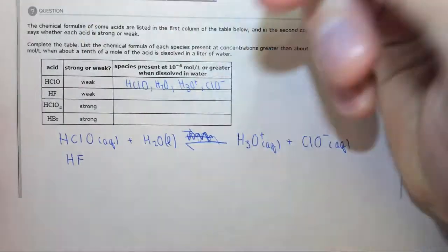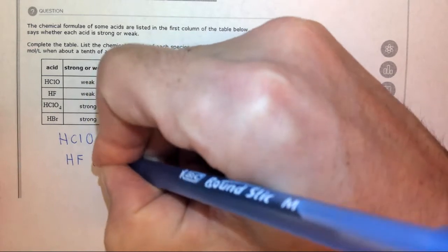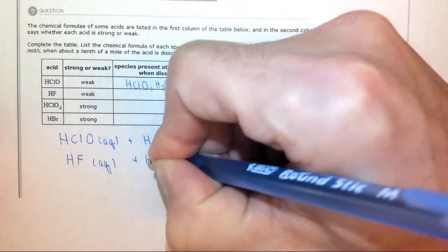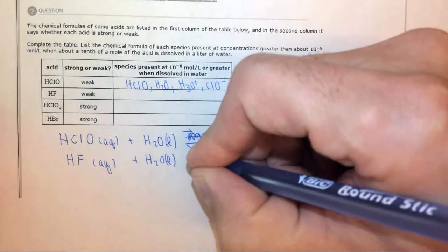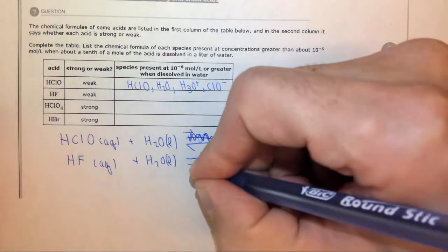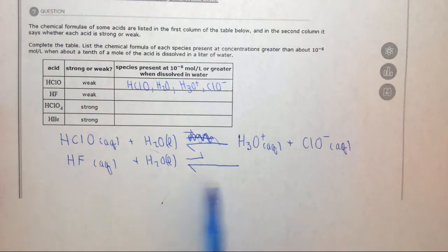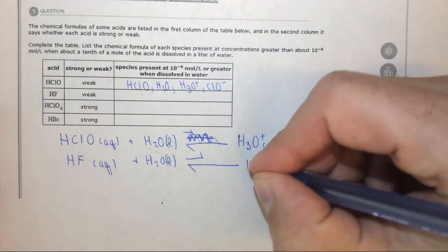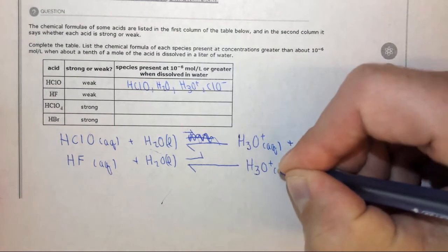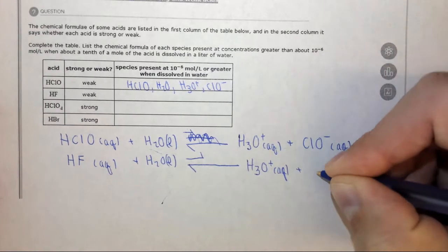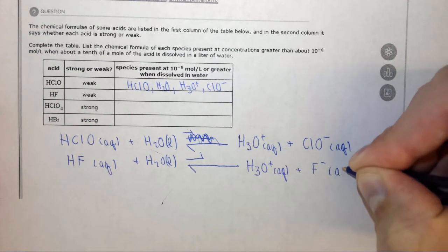Next one, HF, which is a weak acid, aqueous, plus H2O liquid. Again we have this reversible arrow where the reactants are strongly favored, so I'm drawing the reverse reaction as the larger arrow. We get H3O plus aqueous, plus F minus aqueous.